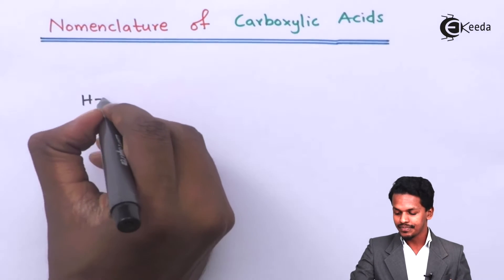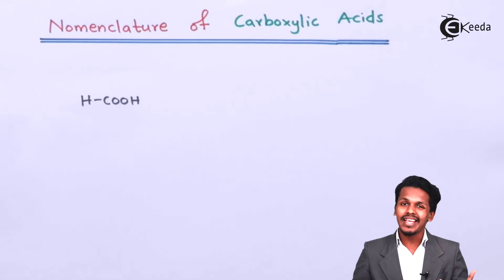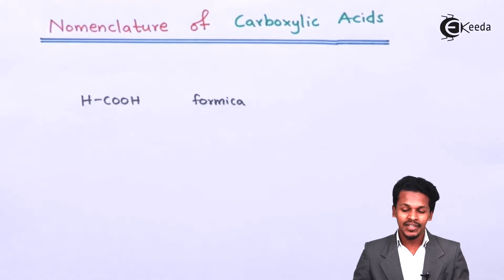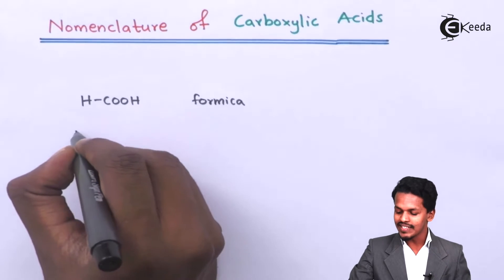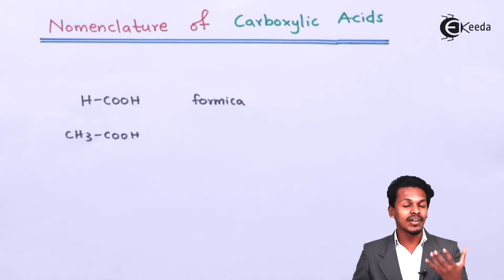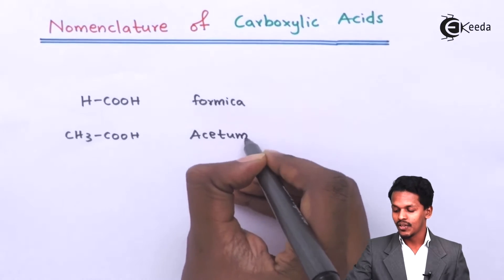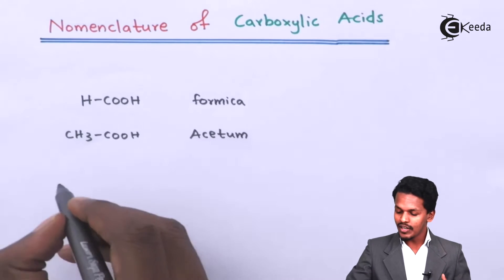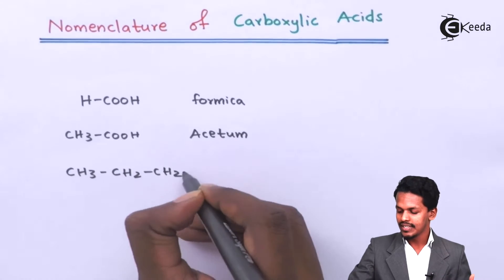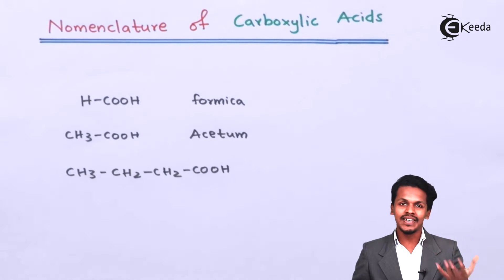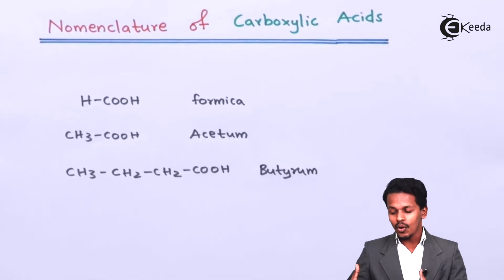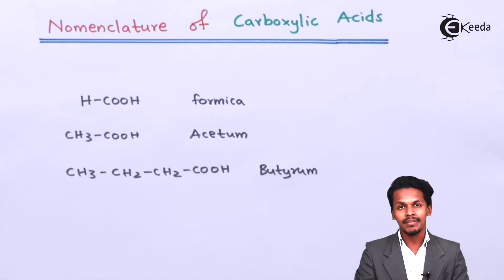For example, the name formic acid is derived from the compound formica, obtained from ants. Acetic acid (CH3COOH) is derived from the word acetum, which is present in vinegar. Butyric acid has the structure CH3CH2COOH, and its name is derived from the word butyrum. This is how common names are given to carboxylic acids.